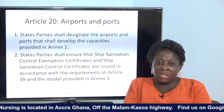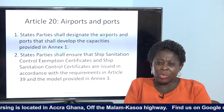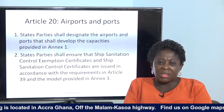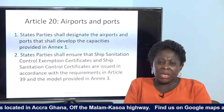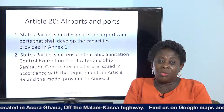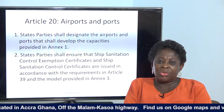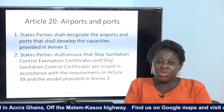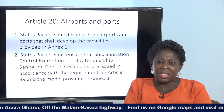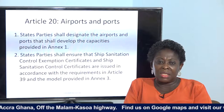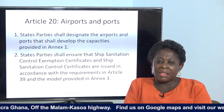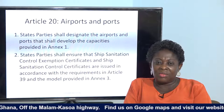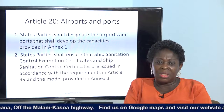Article 20 talks about ports and airports. Every state party shall designate the ports and airports that shall develop the capacity provided. Ghana has only one international airport — Kotoka — so only Kotoka can develop those capacities. For seaports, we have Takoradi and Tema, so we have to designate one to develop the capacity talked about in Annex 1. The state party shall also ensure that ship sanitation control exemption certificates and ship sanitation control certificates are issued in accordance with Article 39 and the model provided in Annex 3.